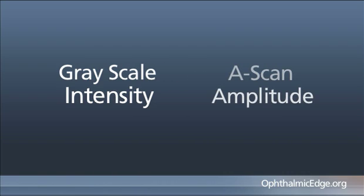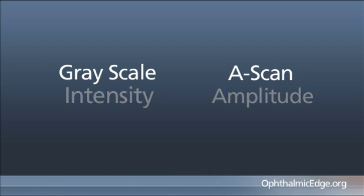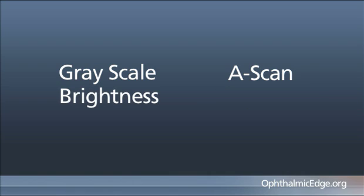A-scan is amplitude discerned by a vertical line from a baseline. The two relate to each other because basically it's similar information but with different displays — one is the brightness of a dot, and one is the ability to measure the height of an amplitude.